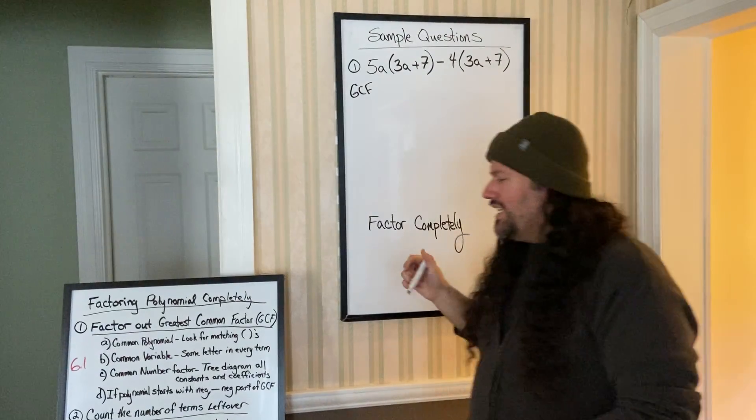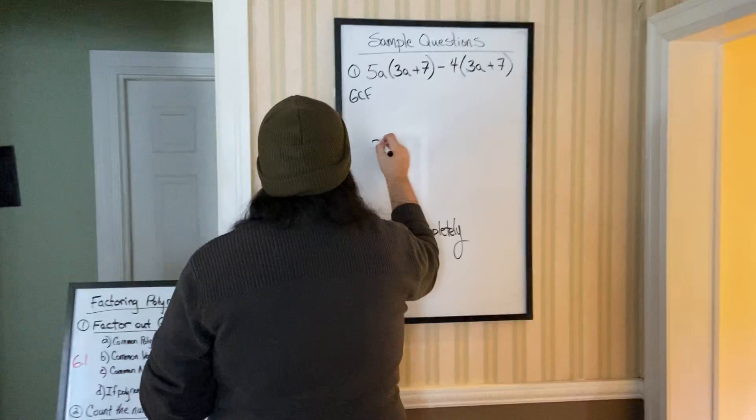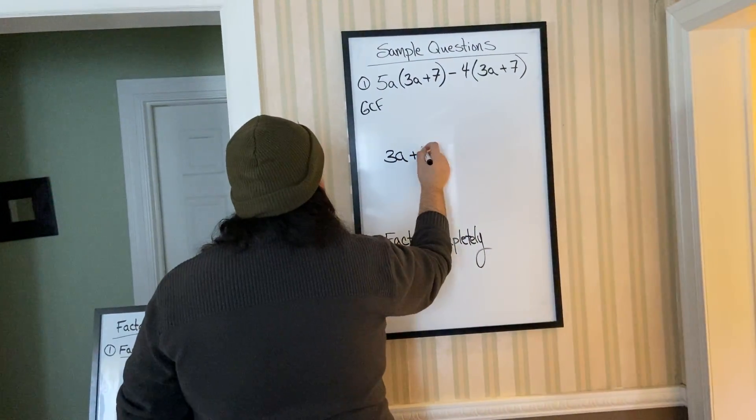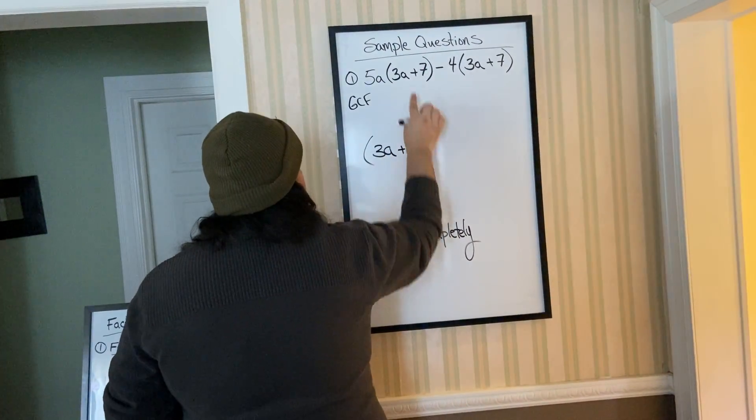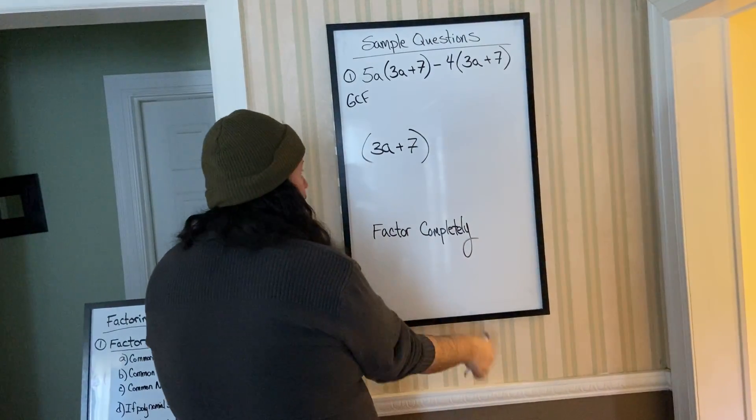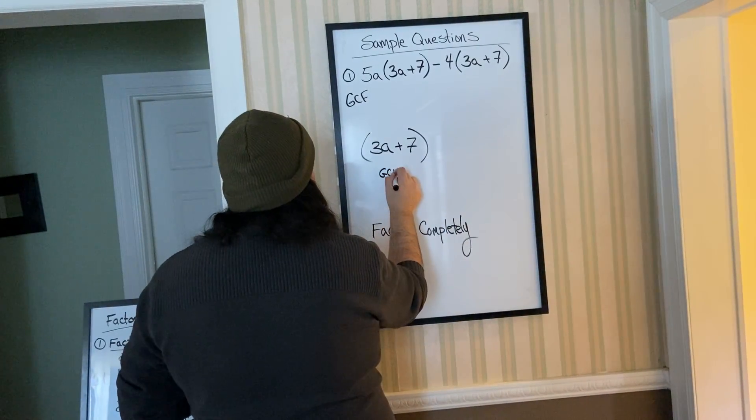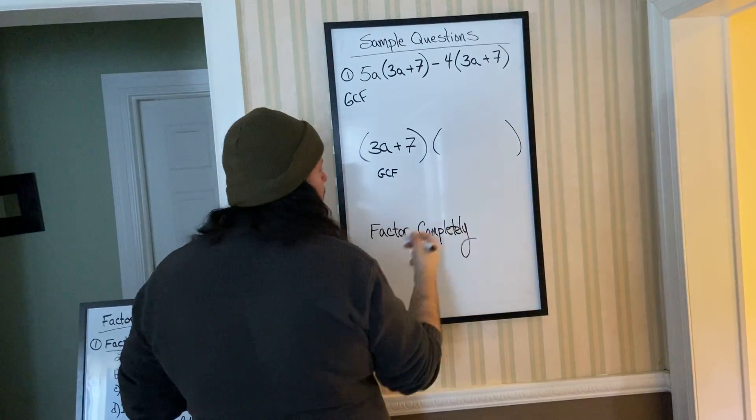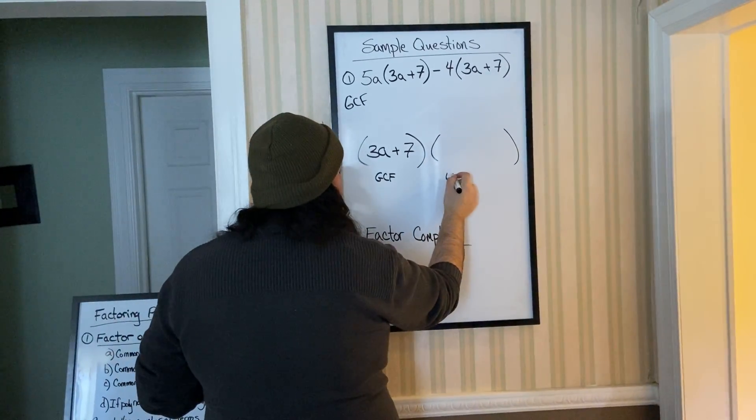So you're going to take out the GCF. We know it's 3A plus 7. Just because I have two sets of parentheses, you'll only write it down once. This is our GCF. The other set of parentheses, when you factor it out, will become our leftovers.